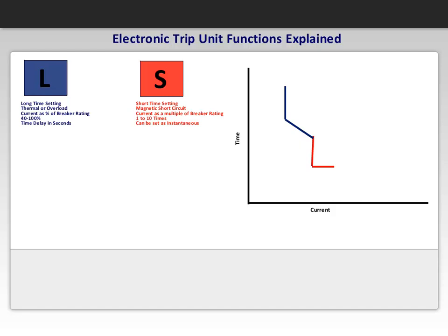The I covers the instantaneous setting. It involves the magnetic portion of the curve, represented by the yellow line. It allows for adjustment of 1.5 to 12 or 13 times the rating.